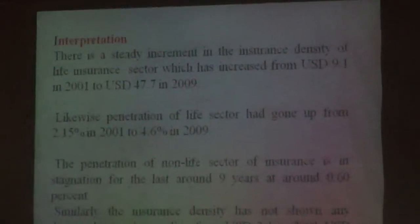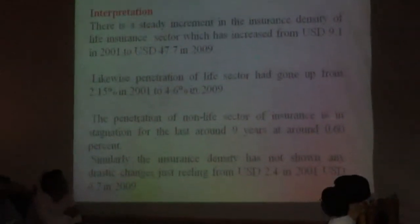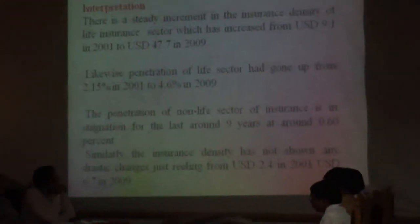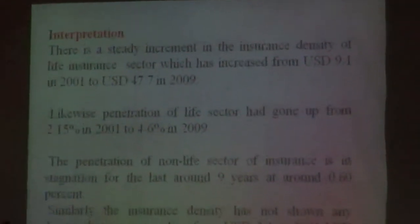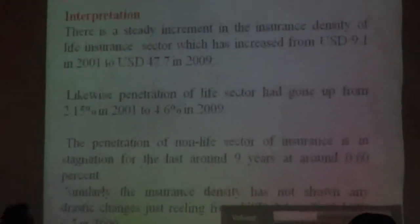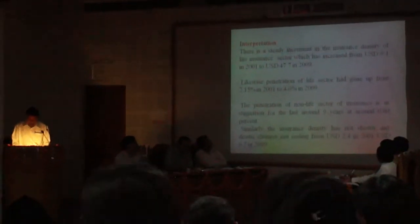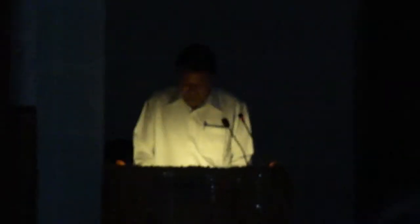From the diagrams and data, I would like to interpret the results. There is a steady increment in insurance density of the life insurance sector, which has increased from US$9.1 in 2001 to US$47.4 in 2009. Likewise, penetration of the life sector has gone up from 2.15% in 2001 to 4.6% in 2009. The penetration of the non-life sector is in stagnation for around 9 years at about 0.60%. Similarly, the non-life insurance density has not shown any drastic change, moving from US$2.4 in 2001 to US$6.7 in 2009.